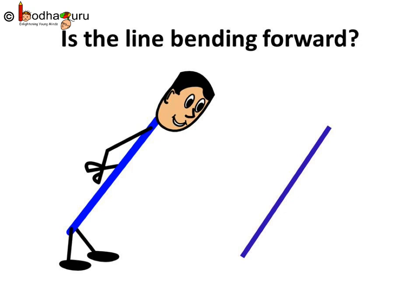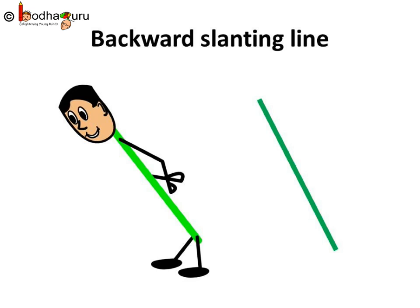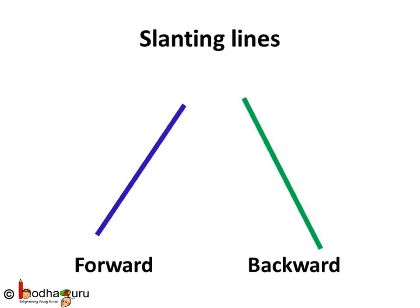Doesn't it look like the line is bending forward? Let us call it a forward slanting line. This is also a slanting line, but it is slanting in the backward direction. Let us call it a backward slanting line. So, forward slanting line and backward slanting line.